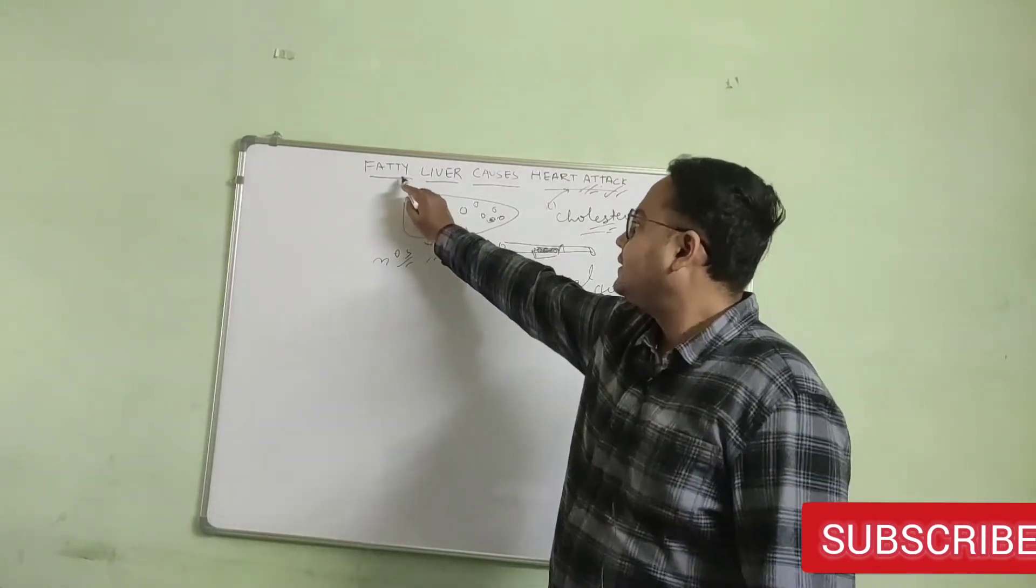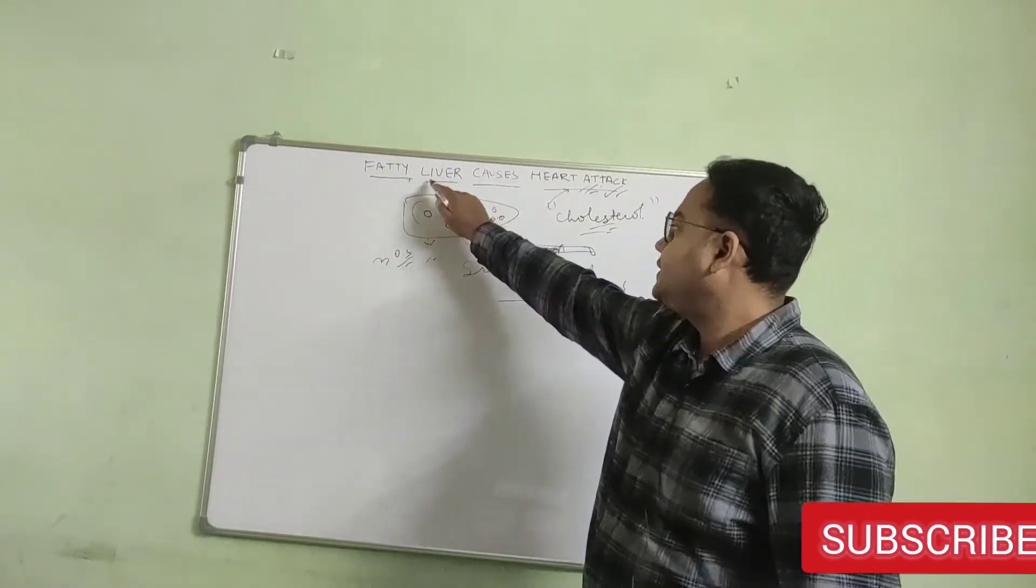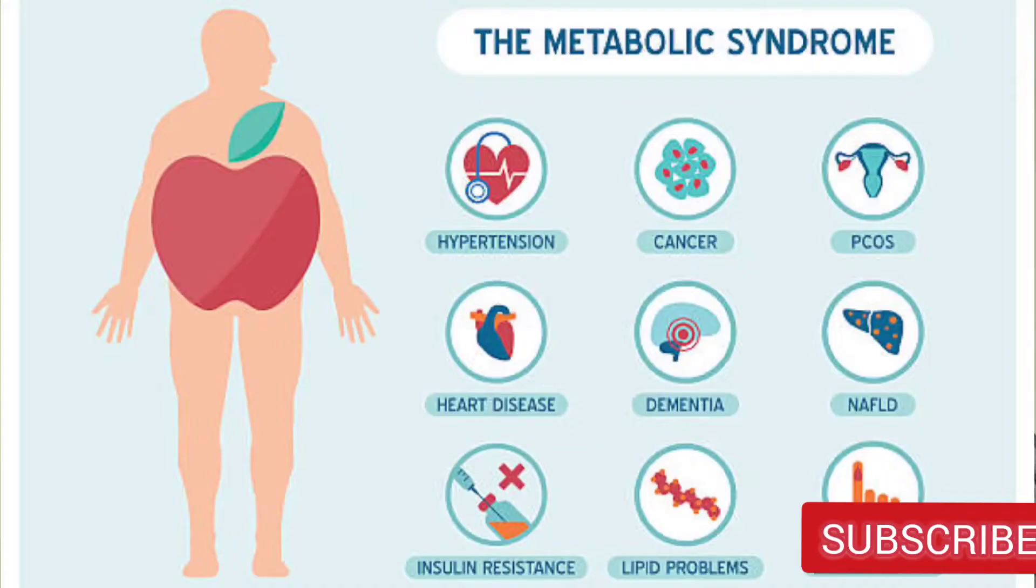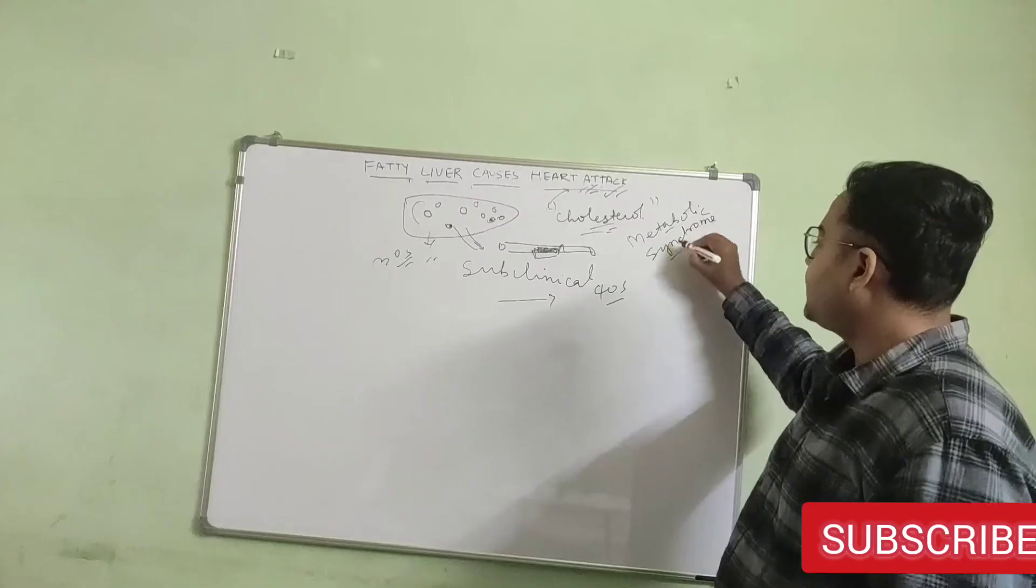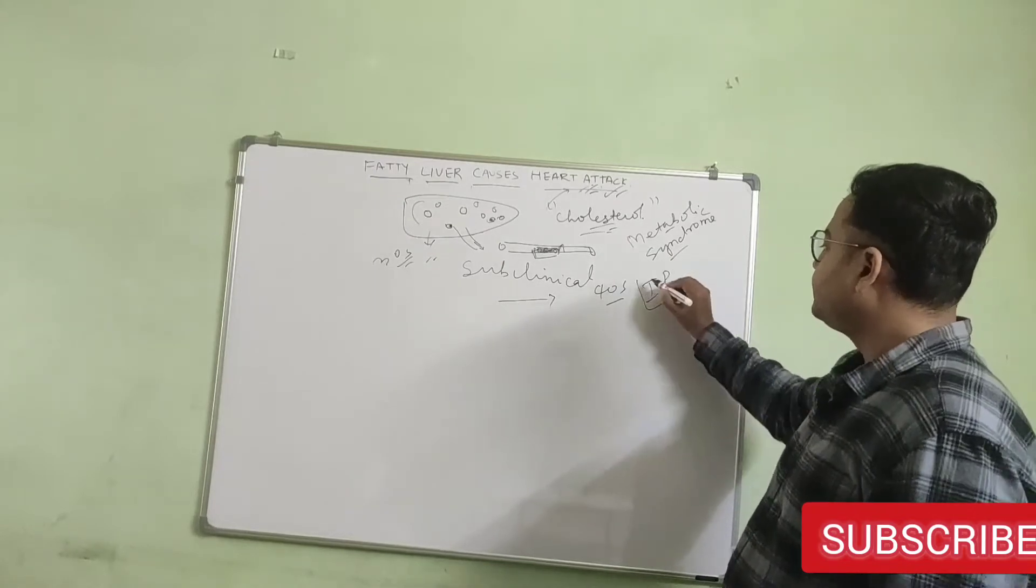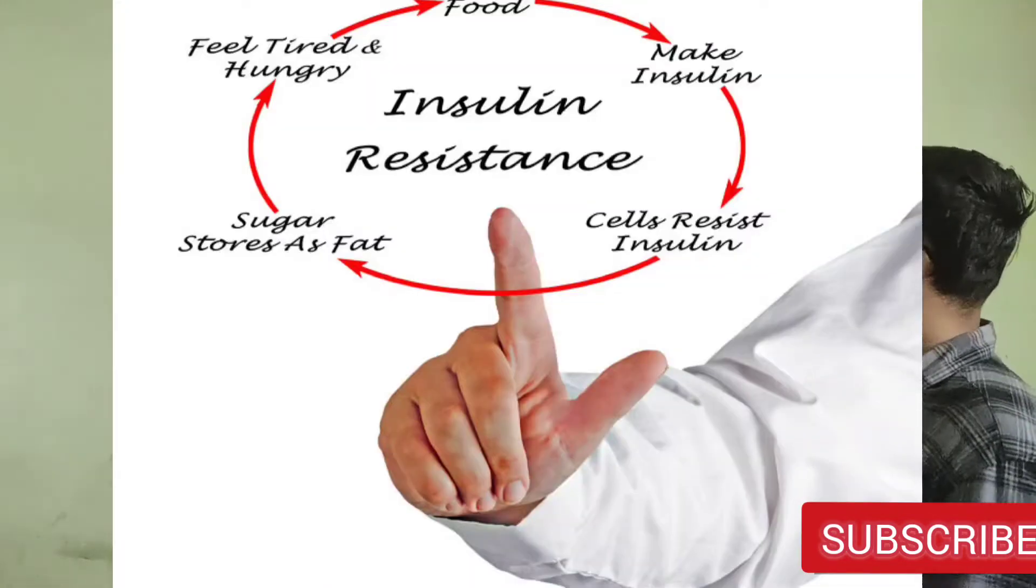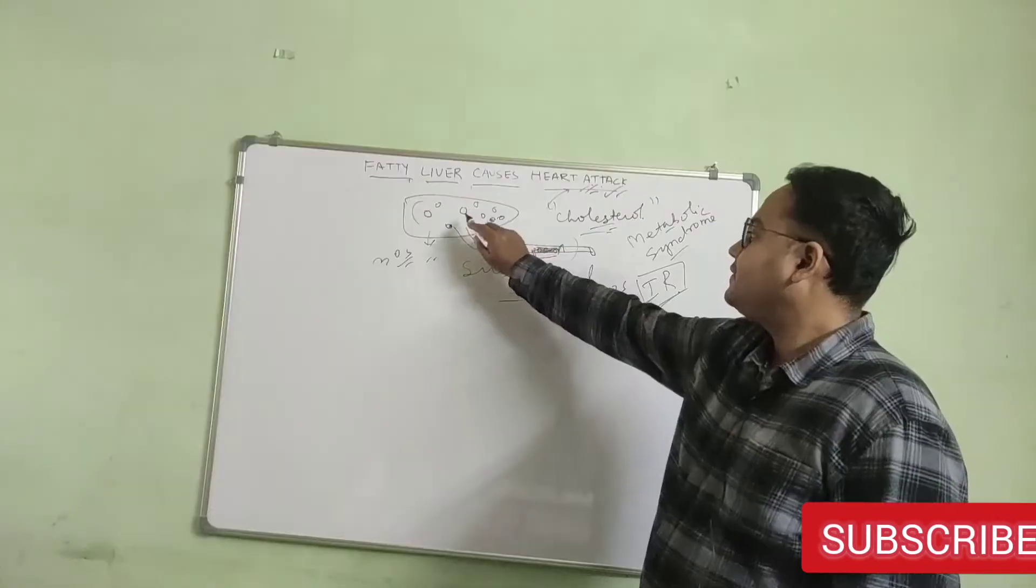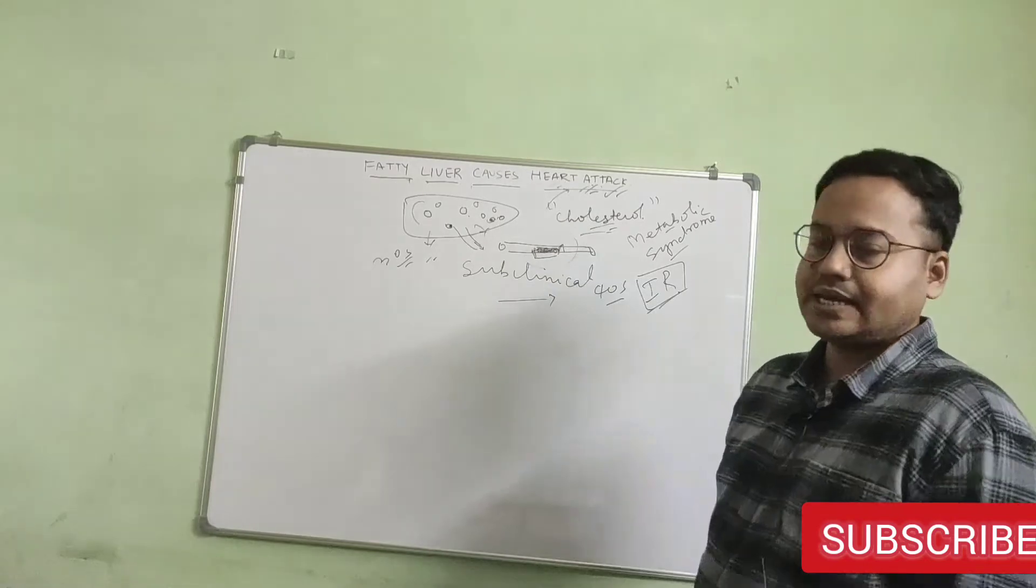What is the common thing between these two, that is fatty liver and heart attack? It is metabolic syndrome, the prevalence of which is very much high in a country like India. And this is because a lot of people are insulin resistant. So insulin resistance can cause low-grade systemic inflammation, can cause fatty liver, and all these things can lead to heart attack.